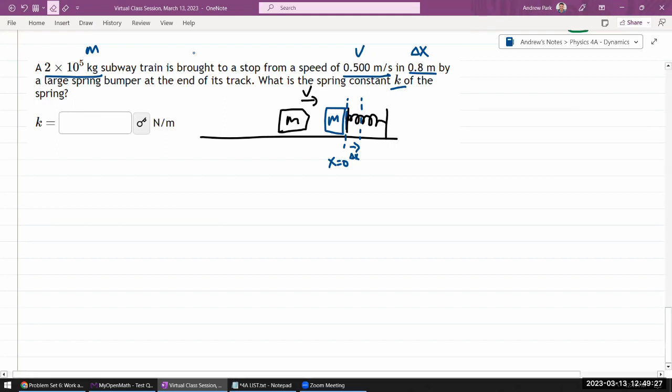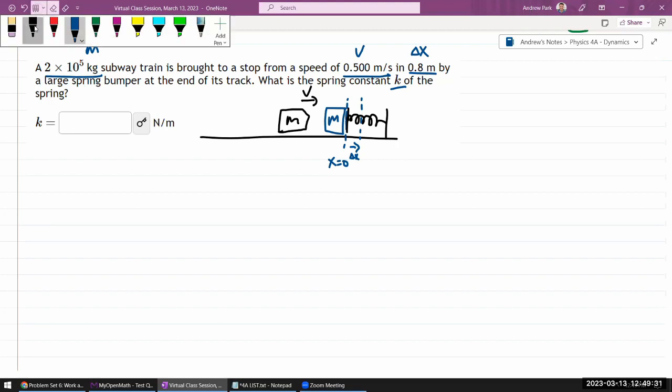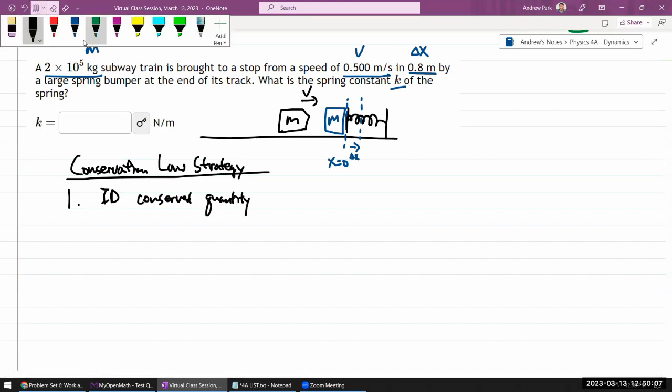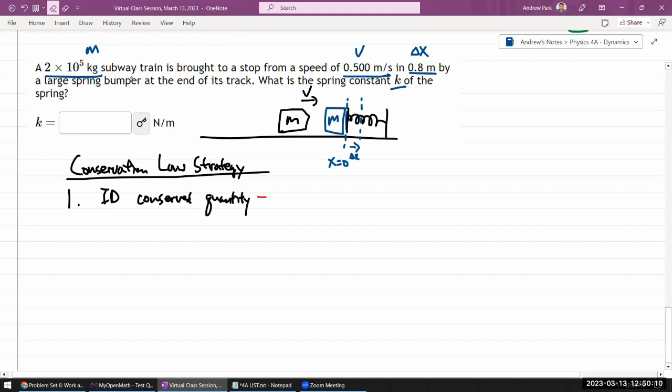So I feel like I should use conservation of energy to answer this. Let me spell out the steps that you should go through whenever you are using a conservation law to solve a question. I call this conservation law strategy. Unlike standard strategy, I don't really give you a strict set of steps to follow, but I will give you the steps that I go through. The first thing to do is identify conserved quantity. And this step is more relevant later on when there could be more than one quantity that's conserved. For us right now, it's really energy.